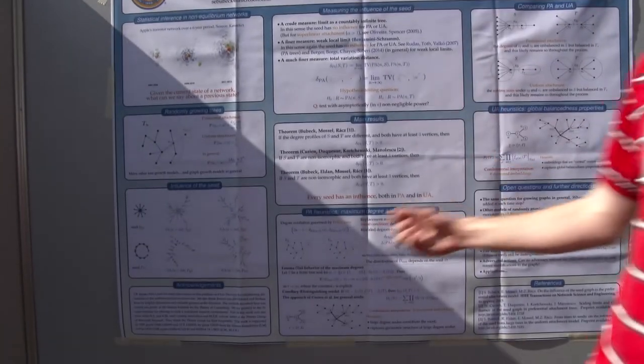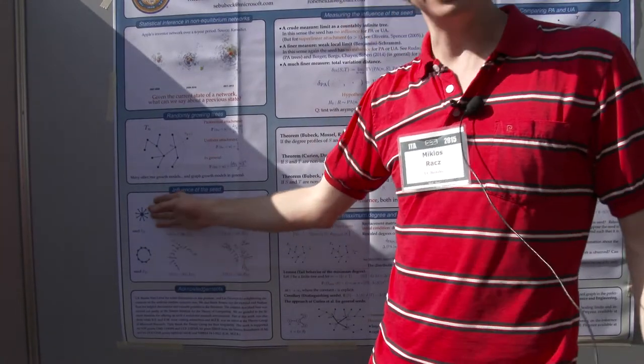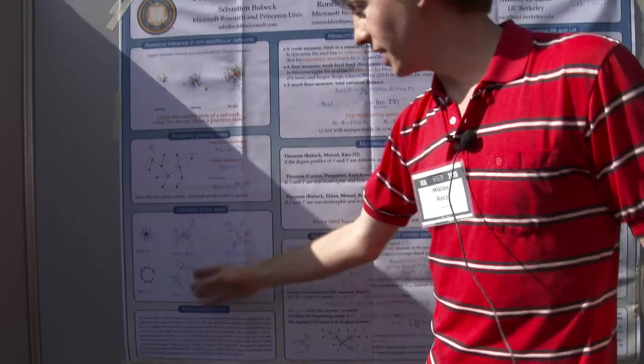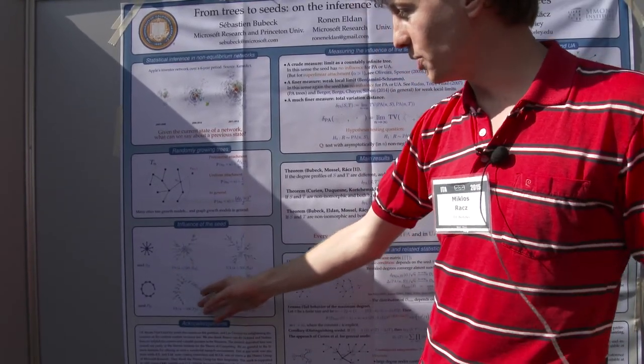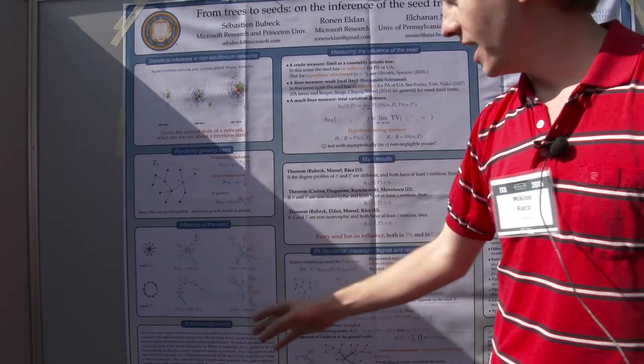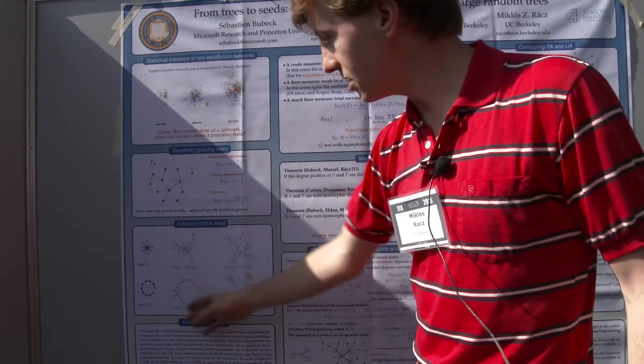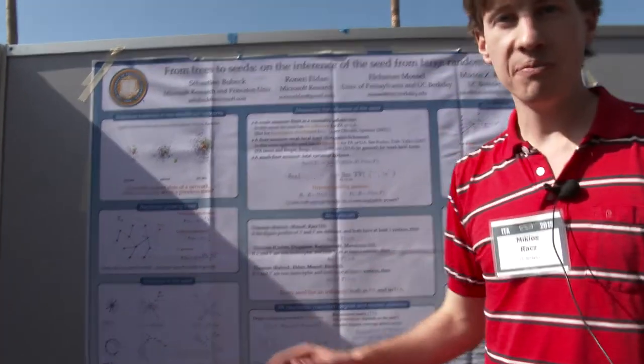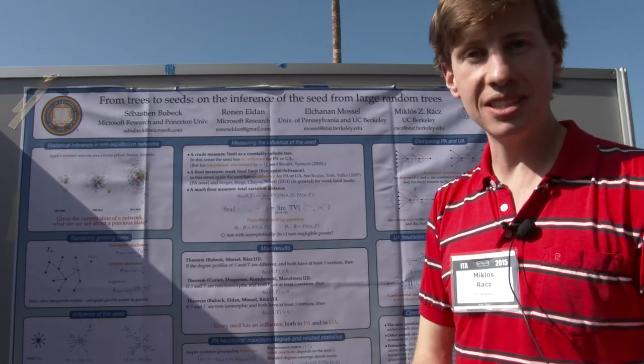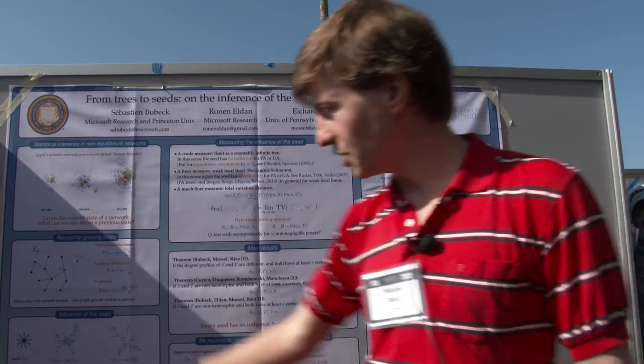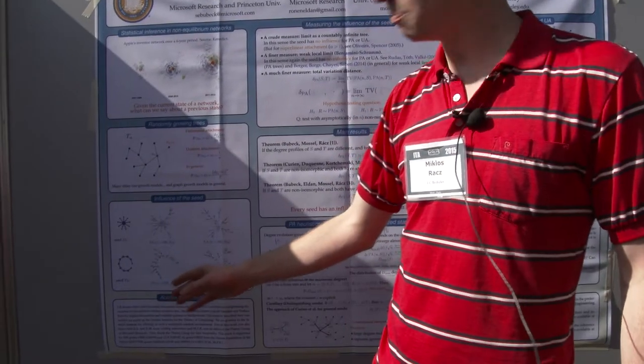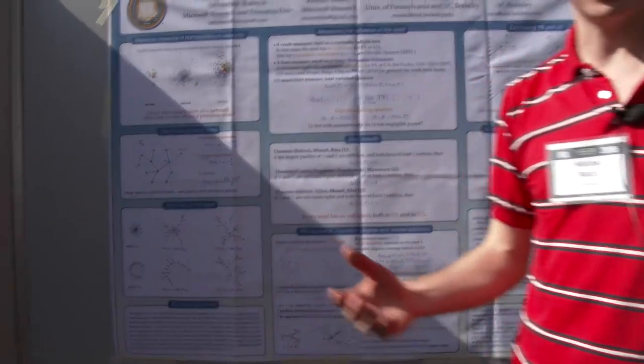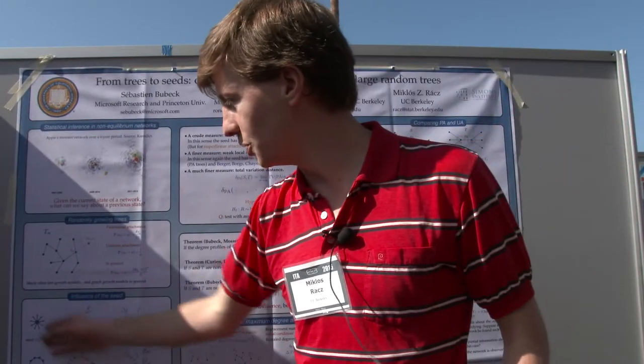So one thing you can do is you can look at two different seeds, look at the realizations of your random tree at n nodes. These live on the same space of n node trees which are unlabeled. So you can look at the total variation distance between these two random measures induced by the two different seeds.